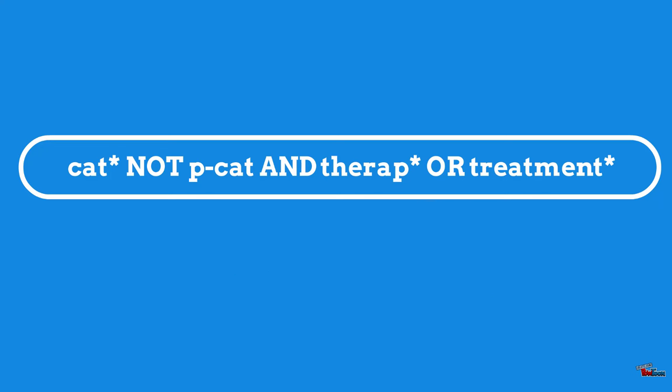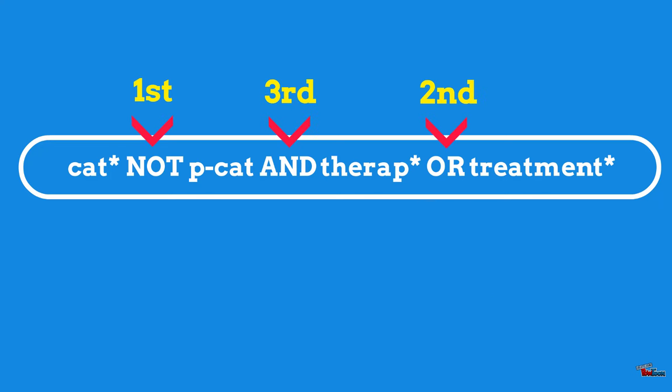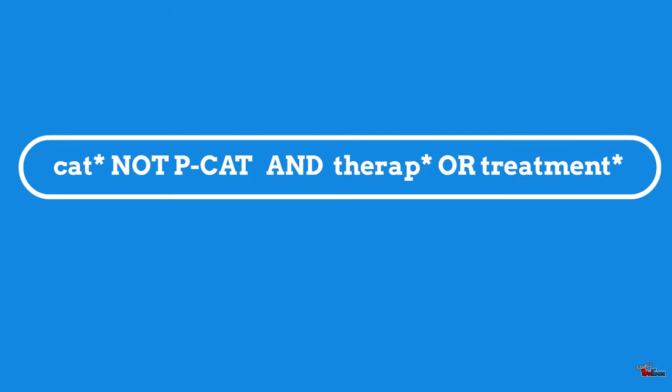By adding brackets, we are able to tell the database exactly what terms and Boolean operators belong together. So with brackets, my search should look a little something like this. By including these brackets, I am able to communicate to the database that I want to retrieve documents that contain some variation of the word "cat", but not "pcat".